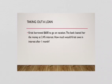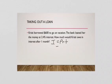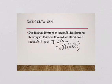Christy borrowed $600 to go on vacation. The bank loaned her the money at 2.4% interest. How much would Christy owe in interest after one month? So we do I equals PRT. The starting amount is $600, the interest rate is 2.4%, which as a decimal is 0.024. It says after one month — since time has to be in years, one month is 1/12 of a year. So we multiply 600 times 0.024 times 1/12.